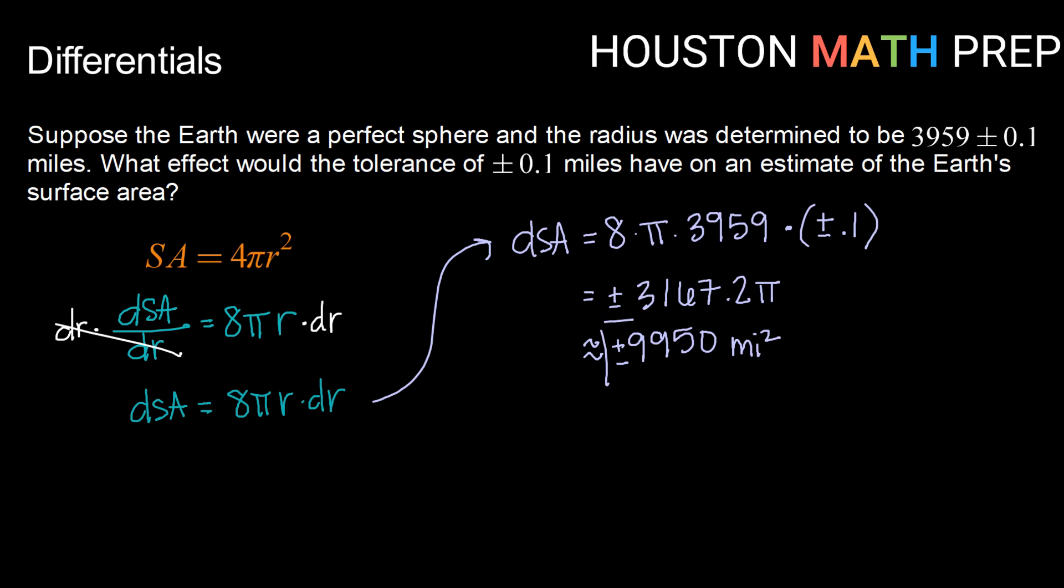So we can see using this process of differentials that even a tolerance level of just give or take one tenth of a mile when thinking about the radius of a planet as large as the earth would affect our surface area by upwards of 9950 square miles.